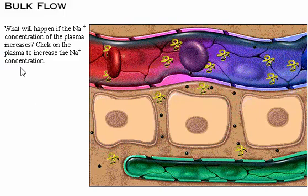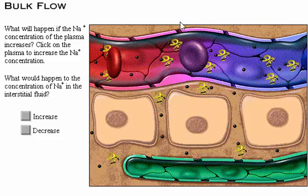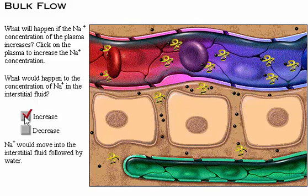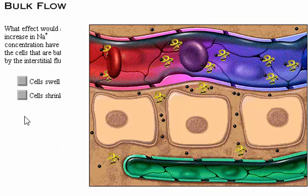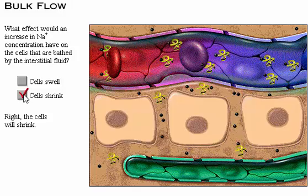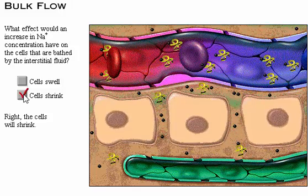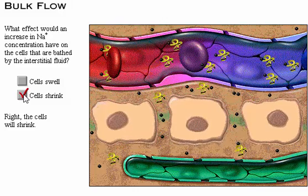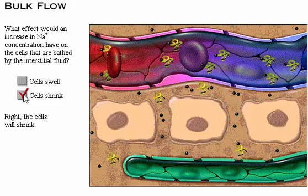If the concentration of sodium ions in the plasma increases, sodium would move into the interstitial fluid, followed by water. The high concentration of sodium and other small solutes in the extracellular fluid exerts significant osmotic pressure on cells, causing them to shrink, and contributes to determining the fluid levels in the intracellular compartment.